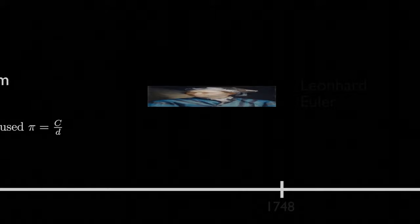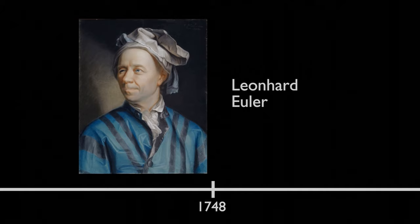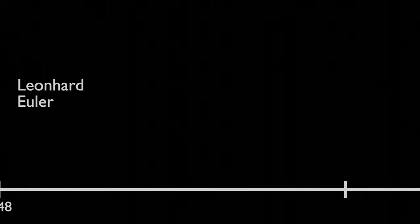Forty-two years later, the popularity of the variable Pi representing this ratio would be solidified when the extremely influential Swiss mathematician Leonhard Euler used Pi to represent the same ratio of circumference and diameter in a publication.